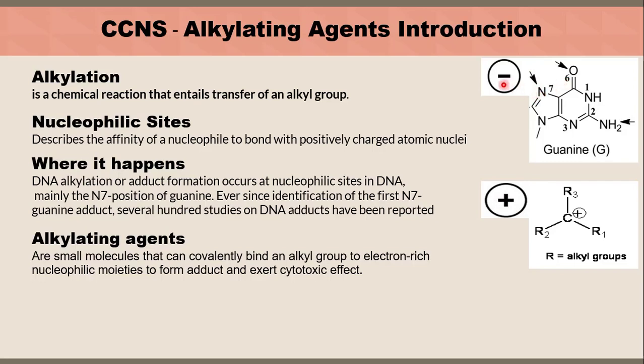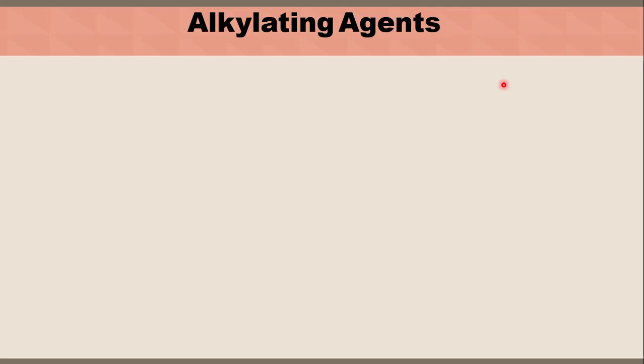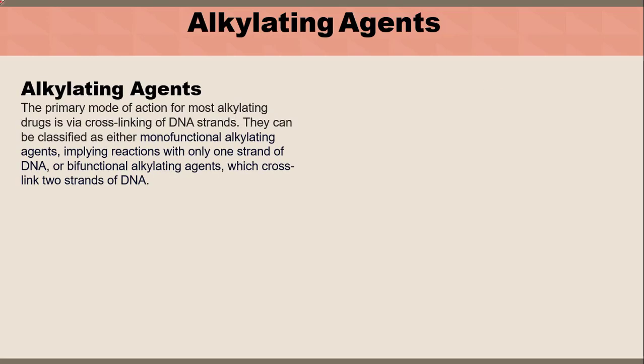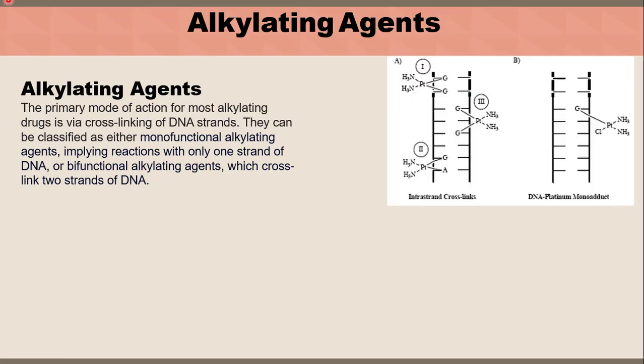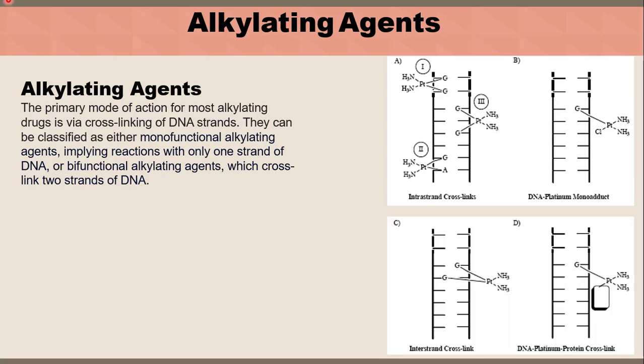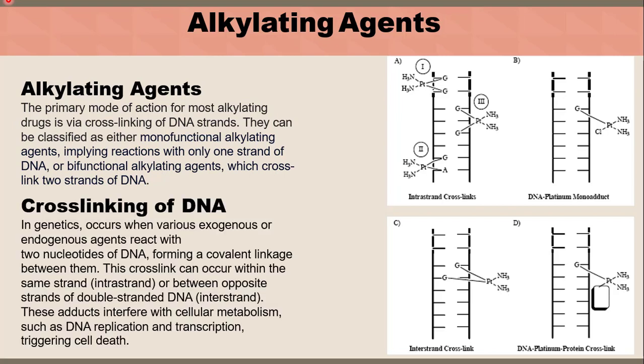The primary mode of action for most alkylating drugs is via cross-linking of DNA strands. They can be classified as either monofunctional alkylating agents, which react with only one strand of DNA, or bifunctional alkylating agents, which cross-link two strands of DNA.